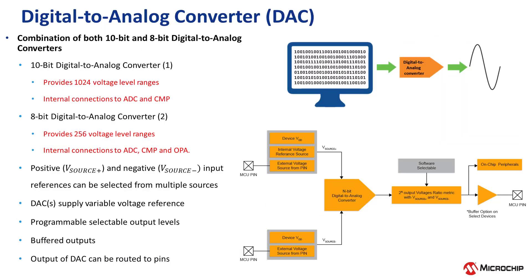The PIC-18 Q71 family of microcontrollers has a combination of both 10-bit and 8-bit digital-to-analog converters, or DACs. The DAC's bit resolution specifies how many selectable voltage levels are possible to generate. The 10-bit DAC provides 2 to the power of 10, or 1024 voltage levels, while the 8-bit DAC provides 2 to the power of 8, or 256 voltage levels. Additionally, the DAC can be configured with different internal voltage reference options or external voltage sources if needed, and it can also provide internal connections to other peripherals such as the ADC and comparator. The DACs also offer buffered outputs.